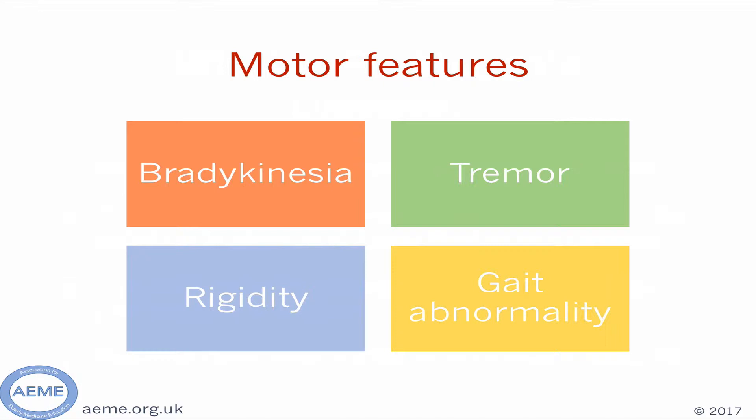By comparison, tremor is a common feature of Parkinson's disease, but approximately a third of patients will not have one. The tremor tends to be unilateral and mainly present at rest. It can be intermittent and may be exacerbated by stress or fatigue. Patients may describe it as a shaking or nervousness. Rigidity is something patients describe as a stiffness in the limbs, which again can be unilateral.